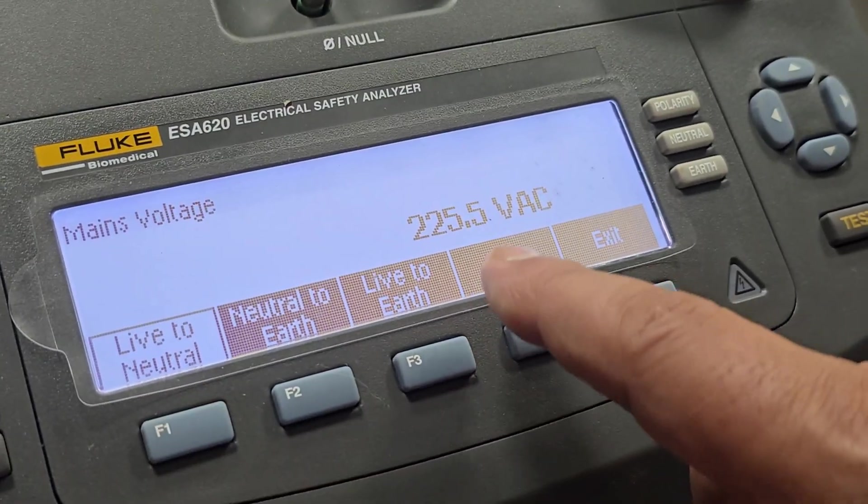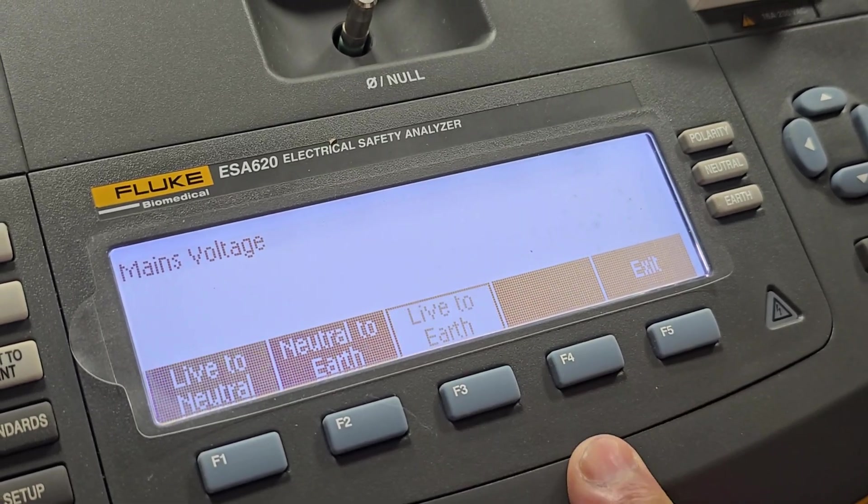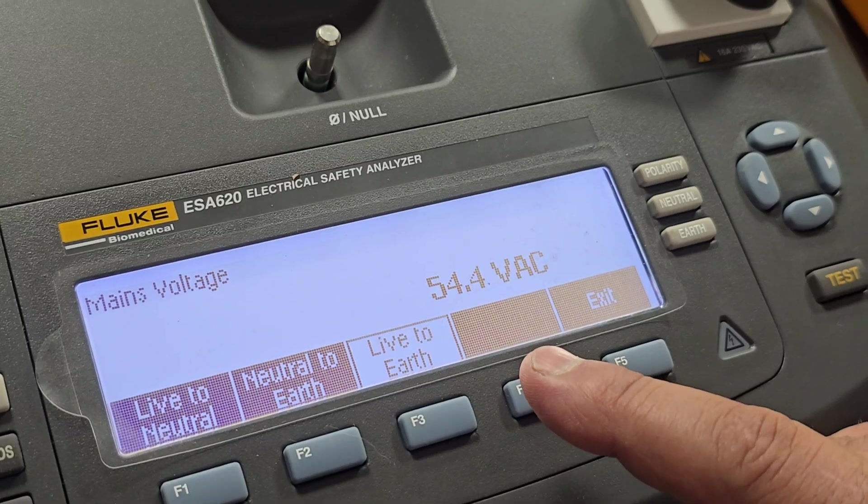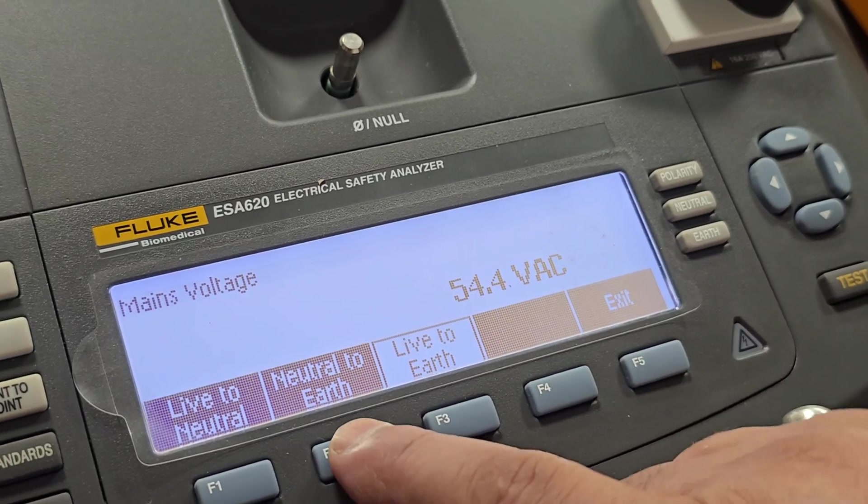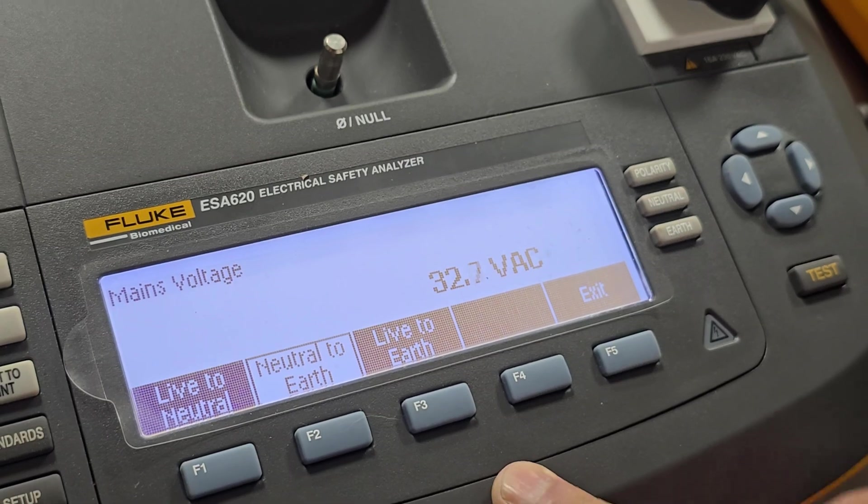You can see live to neutral is 225, that's correct. Then live to earth also should be same. But see, this is 53, so that means your ground has a problem. What should be the neutral to earth?